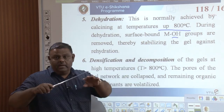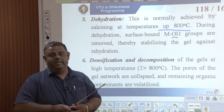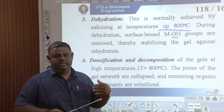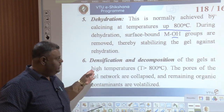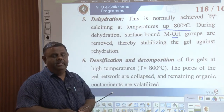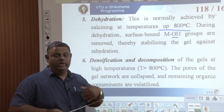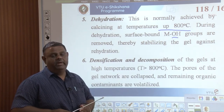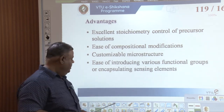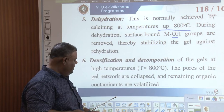When the gels are treated at temperatures above 800°C, the pores of the gel network collapse and remaining organic contaminants are volatilized. Above 800°C, all organic content easily undergoes volatilization. Thus, the nanomaterial is obtained after the densification and decomposition process.